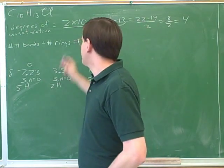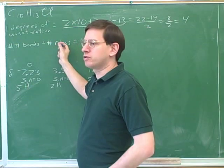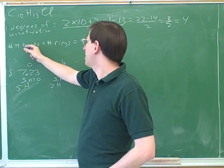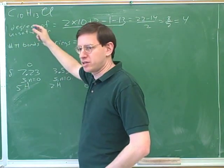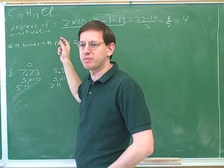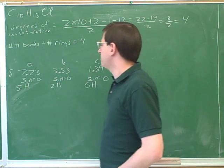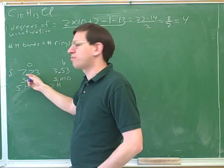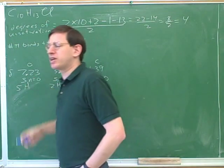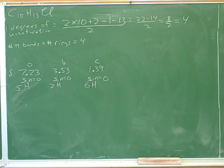You worked out that there are many different possibilities here. There could be no pi bonds and four rings, or one pi bond and three rings, or two pi bonds and two rings — a whole bunch of different possibilities. One clue that should really jump out is the 7.23 signal. Let's see if we can look at our table and see what absorbs in the 7.23 region.